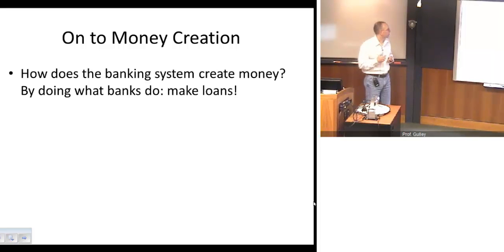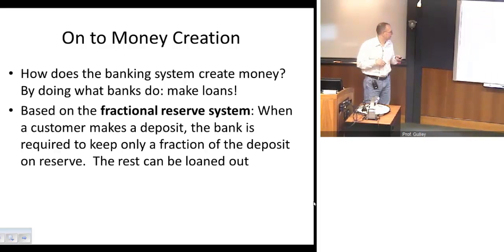Now, on to money creation here. In terms of how money gets created, it gets done very simply, simply by how banks do what they do every day, by making loans. And we have, and most countries have this too, what's called a fractional reserve system. So, when you make a deposit, what happens is this: The bank is required, by law, to keep a certain fraction of that deposit on reserve. What they can do is loan out the rest of that.